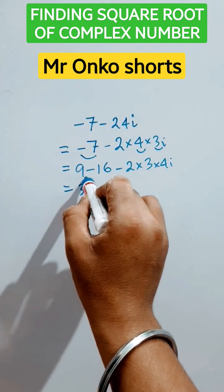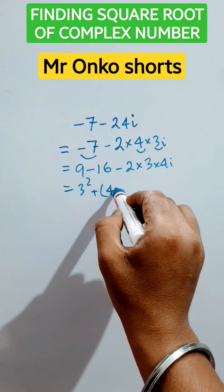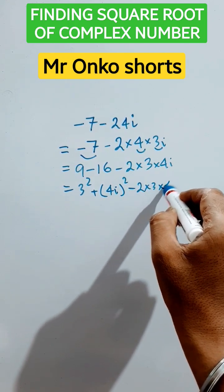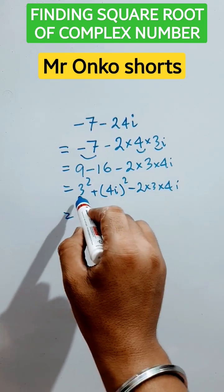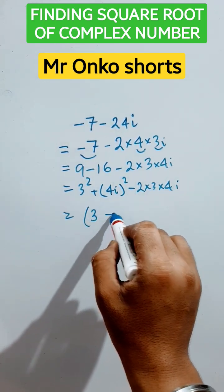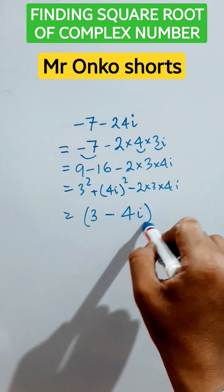Now it is 3 square plus of minus 16 is 4i whole square. Since i square equals minus 1, so 2 into 3 into 4i. So here it is a square plus b square minus 2ab. So a is 3 here and b is 4i whole square.